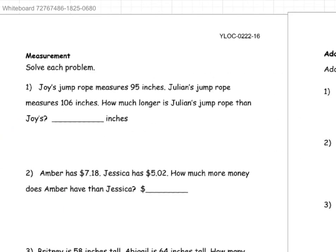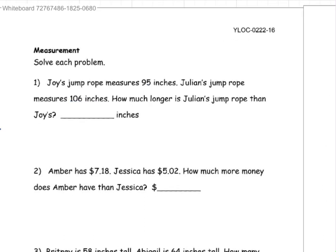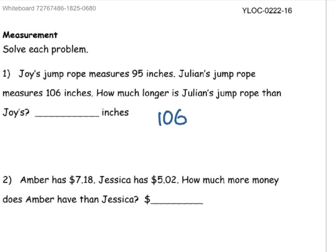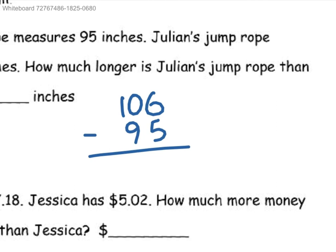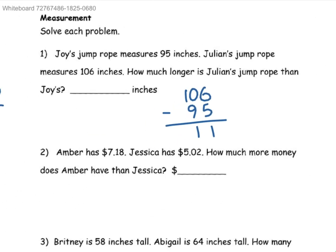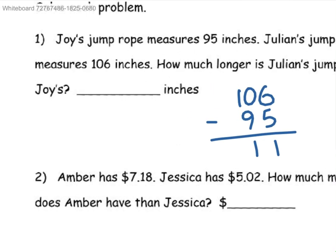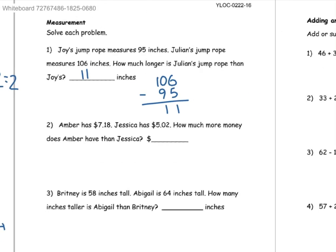Measurement. Solve each problem. Joy's jump rope measures 95 inches. Julian's jump rope measures 106 inches. How much longer is Julian's jump rope than Joy's? So since Julian's is 106 and Joy's is 95, we subtract. So 6 minus 5 is 1 and 10 minus 9 is 1. So Julian's jump rope is 11 inches longer than Joy's.